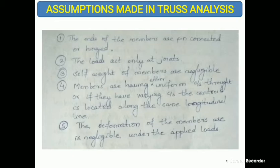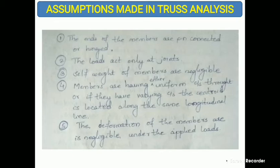Fourth, members have either uniform cross-section throughout, or if the cross-section varies, the centroid lies along the same longitudinal line. Fifth, deformation of members is negligible under applied loads — the truss does not bend or displace when a load is applied. You need to remember these assumptions as MCQ questions may come from them.